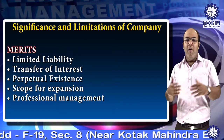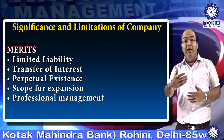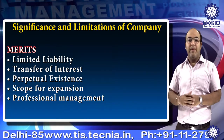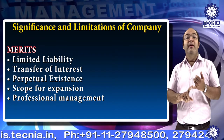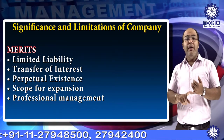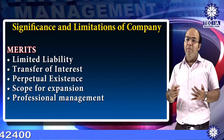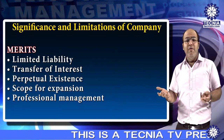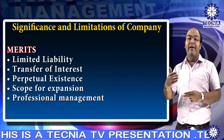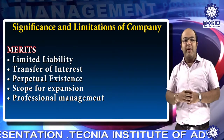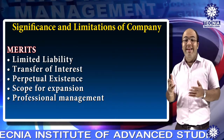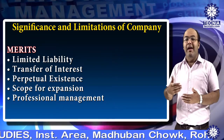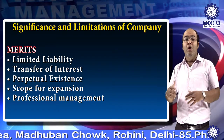Now we will discuss the merits and demerits of a company. The first merit is limited liability — limited liability of shareholders reduces the degree of risk borne by them. Second, transfer of interest — easy transferability of shares increases the attractiveness of shares for investment. Third, perpetual existence — a company is not affected by the death, insanity, or insolvency of any member.